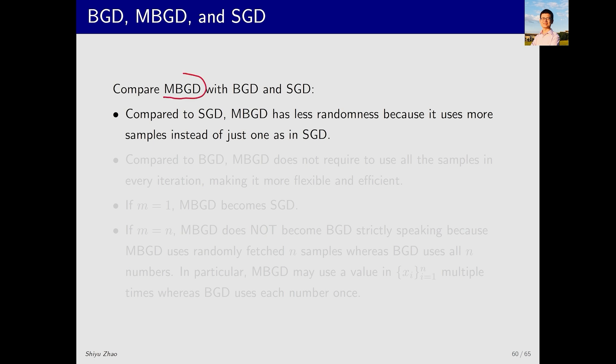In essence, MBGD can be considered to encompass BGD or SGD. Why? Because when the mini-batch size approaches one, MBGD becomes SGD. When the batch size is large, it becomes BGD.